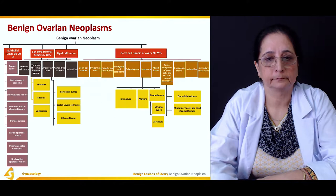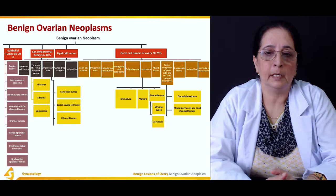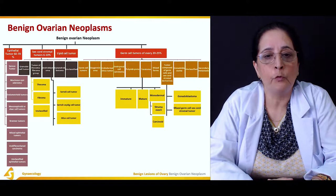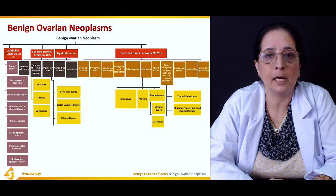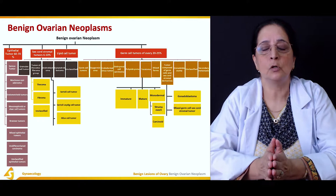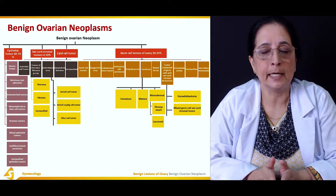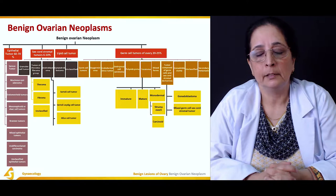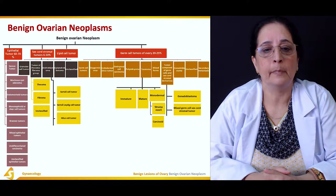Benign ovarian neoplasms are classified according to their tissues or cells of origin and are divided into four main types. First is the epithelial tumor, which constitutes about 60 to 70% of all benign ovarian neoplasms. Second is sex cord stromal tumor at 6 to 10%. Third is lipid cell tumor. Fourth is germ cell tumor of the ovary, which is about 20 to 25%.